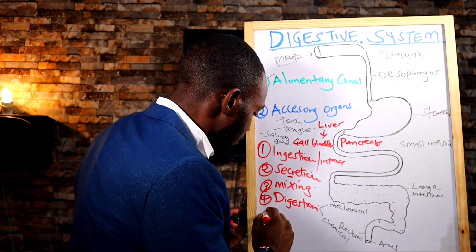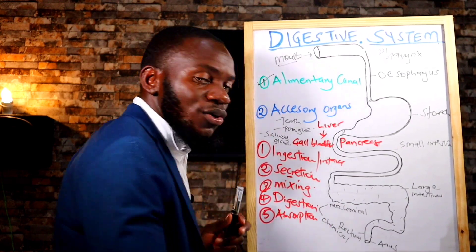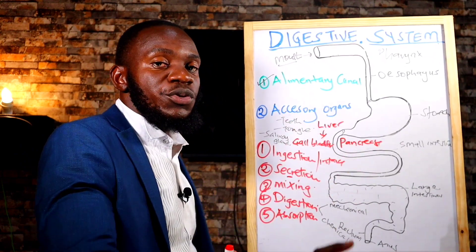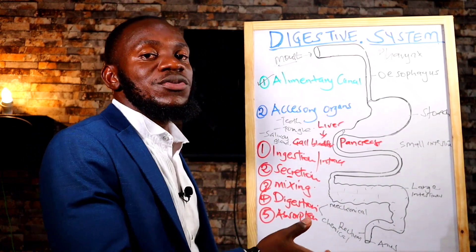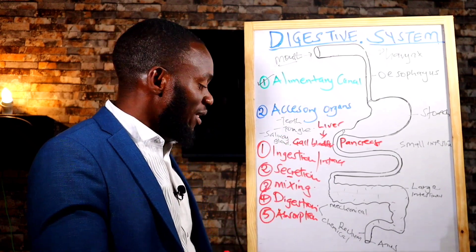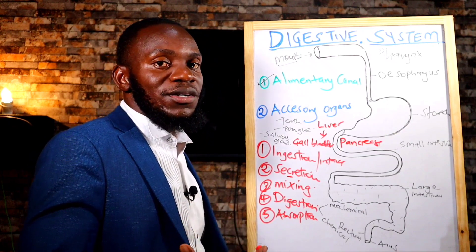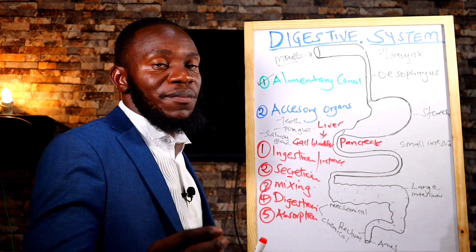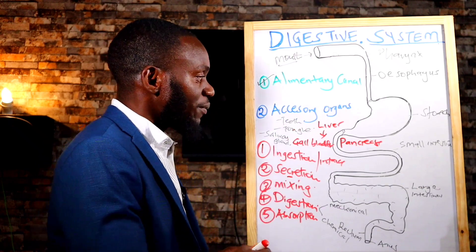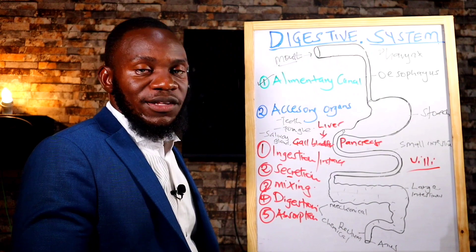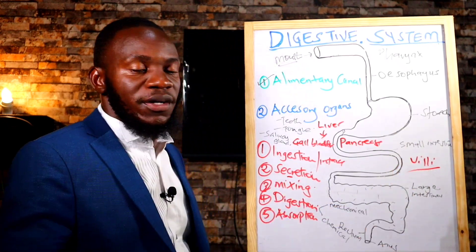Function number five is absorption. It is the role of the digestive system to absorb nutrients. After you break nutrients down both chemically and physically, you absorb them so they get into the bloodstream and flow all over the body. The major part of food absorption is the small intestines, which have finger-like projections called villi that increase the surface area for absorption.